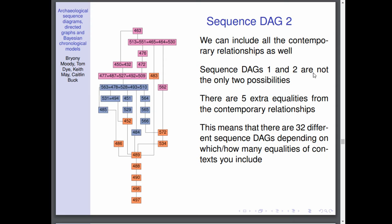But these two sequence DAGs are not the only possible ones. There are actually five extra equalities that are included in the contemporary relationships. So what if you're less certain about some contemporary relationship than others? Well, if you want to look at the different combinations that you can have of sequence DAGs by including or not including these five different contemporary relationships, this produces 32 different sequence DAGs.